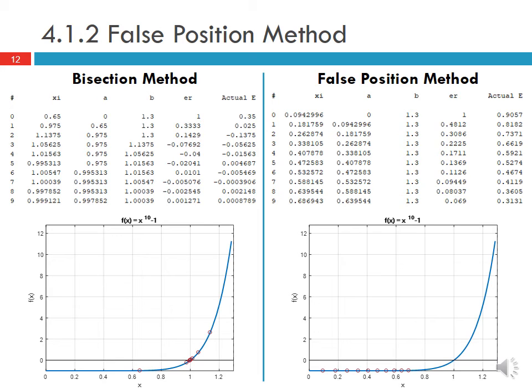Using the bisection method after about nine iterations we have an approximate relative error of 0.00127 and an actual error of 0.00087, so we have reasonably good accuracy after about nine iterations. However, for the false position method after the same number of iterations, our relative error is 0.069 but our actual error is 0.3131. You can see what's happening here: with each iteration the new estimate is not changing very much and it's not getting very close to the actual root, whereas for the bisection method we did actually get close to the root reasonably quickly.